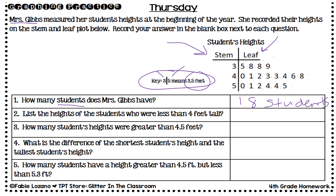Question two: list the heights of the students who were less than four feet tall. Students less than four feet tall are those in the three-stem row — that would be three and five tenths, three and eight tenths, three and eight tenths, and three and nine tenths.